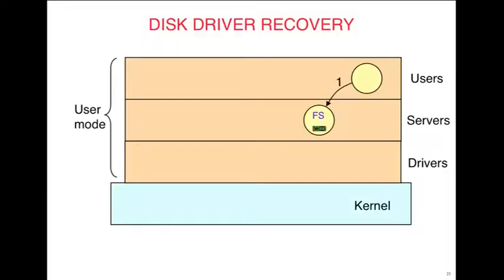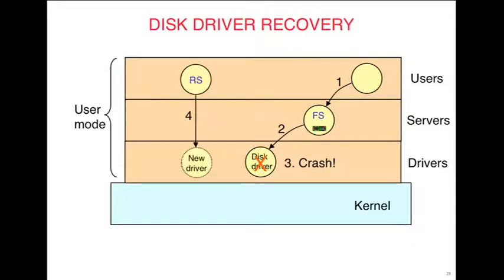Disk driver recovery looks like this: user calls file system, file system calls disk driver, disk driver crashes. The reincarnation server detects this, starts a new driver, and tells the file system. The file server saved the message it sent, resends it to the new driver, and hopefully the new one does the work. Most errors are transient — some weird timing combination causes failure, but if you run it again, it probably won't happen. This is the whole point of a self-healing system: it detects its own errors and corrects them on the fly.